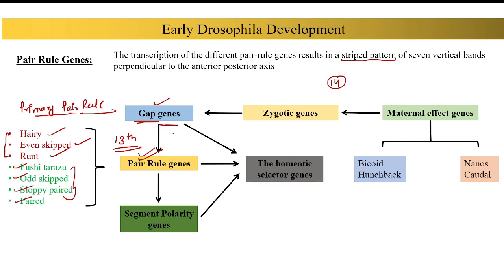When we get a gap gene expression, we get a gradient, and then we get pair rule gene activation. The primary pair rule genes are activated first, and then further the secondary pair rule genes can show expression. This is the cascade: gap gene expression leads to a gradient, which promotes primary pair rule gene transcription, followed by secondary pair rule gene expression.